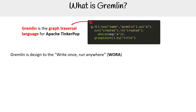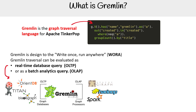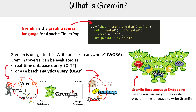Gremlin is designed to write once and run anywhere — WORA. A Gremlin traversal can be evaluated as a real-time query, so OLTP, or a batch analytic query, OLAP. Over here are the OLTP graph databases, and on the right-hand side we have OLAPs. Gremlin's hosted language embedding means you can use your favorite programming language when writing Gremlin.